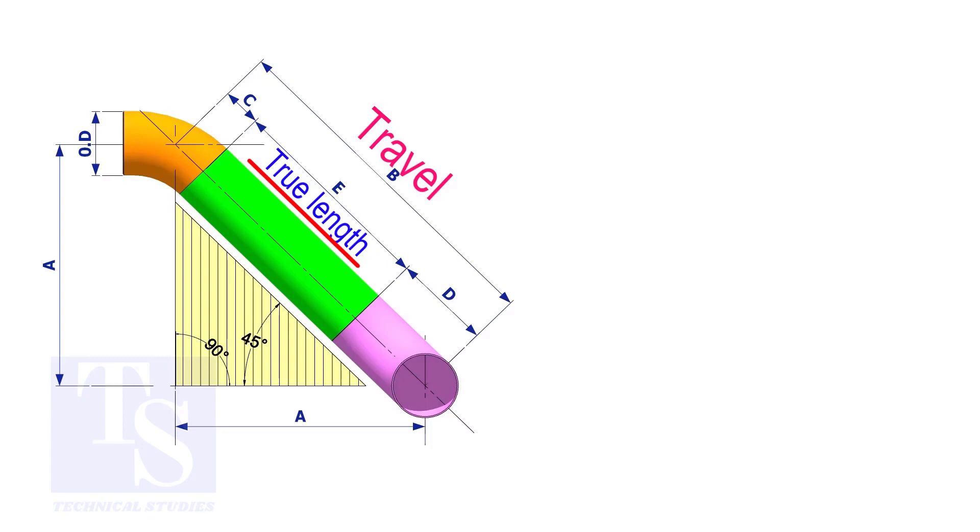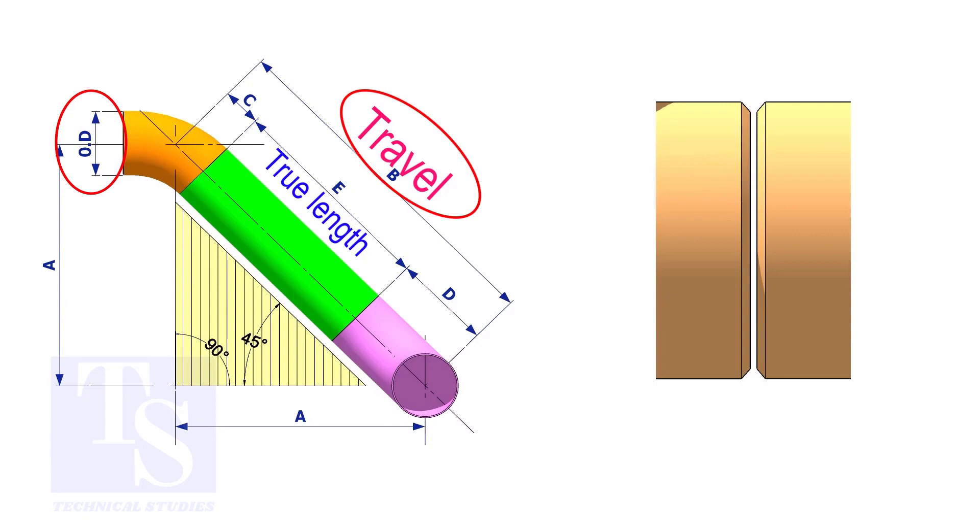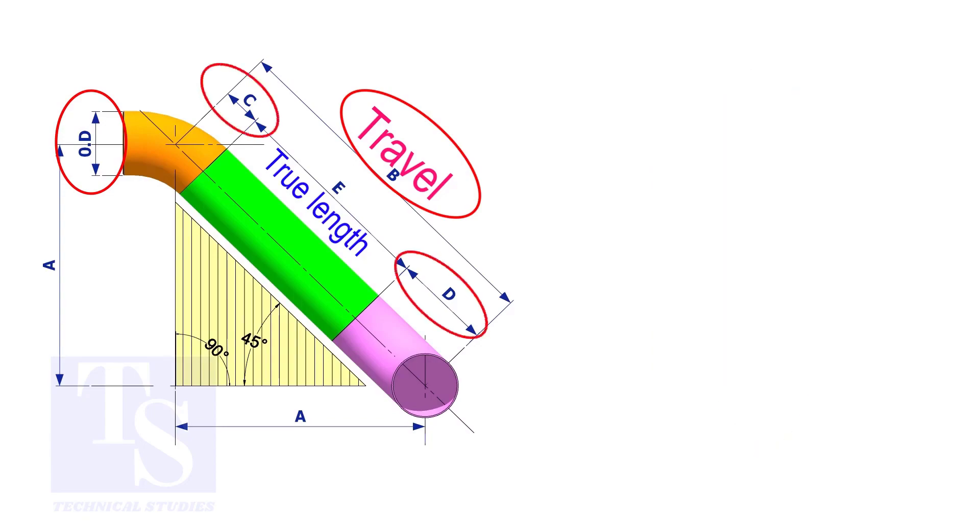To calculate the true length or the cut length, we need to know the travel length, the diameter of the pipe, the joint gap, and the elbow center. The elbow center is sometimes called takeoff length.